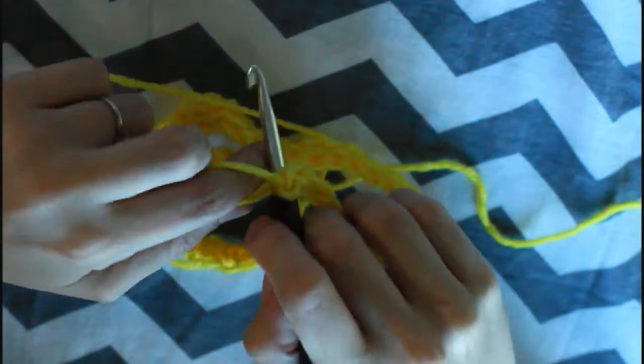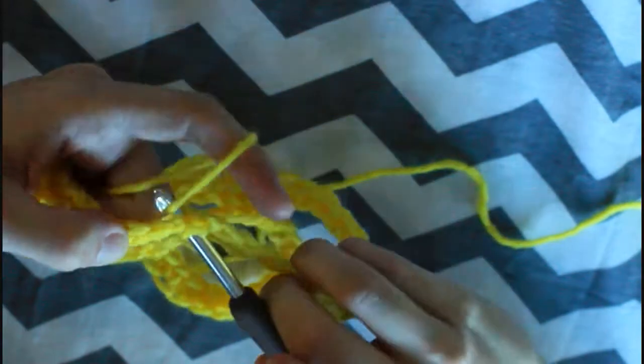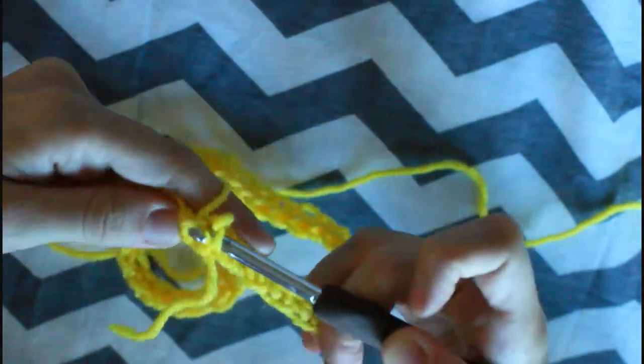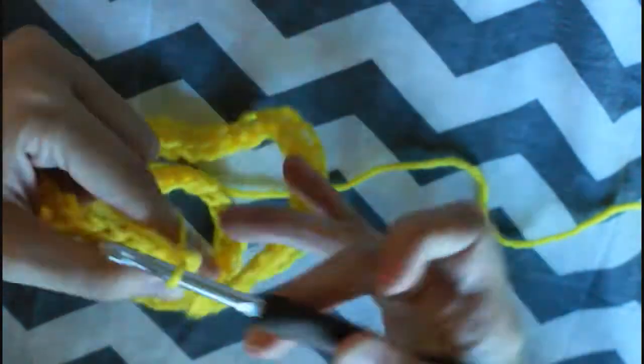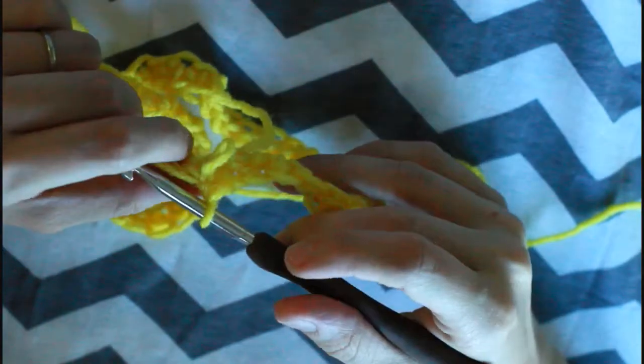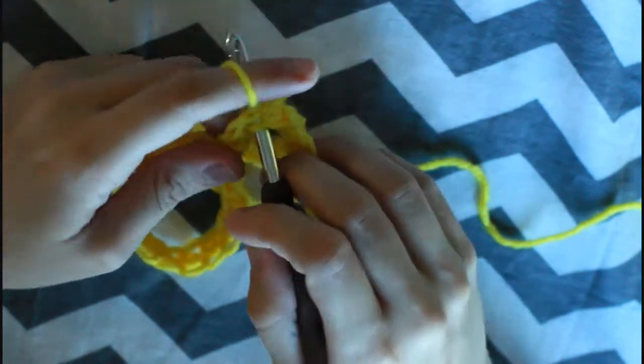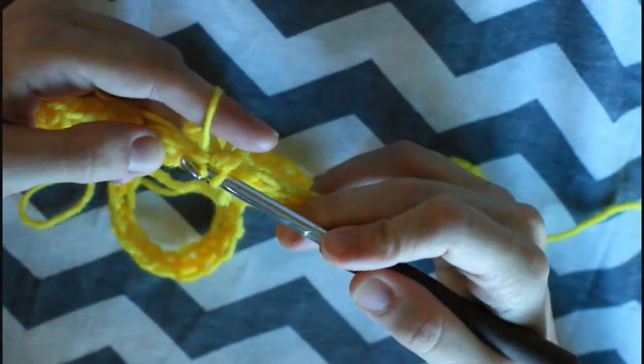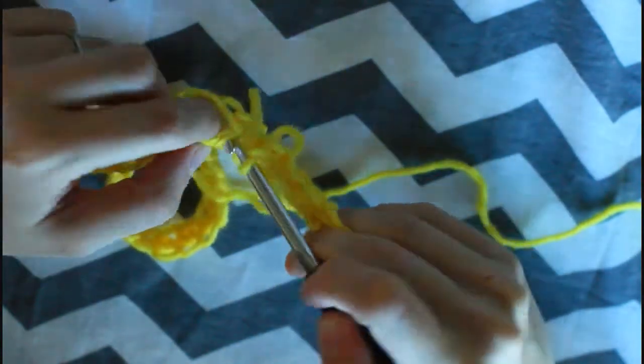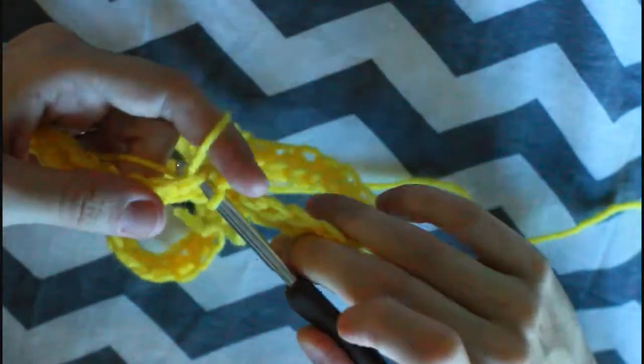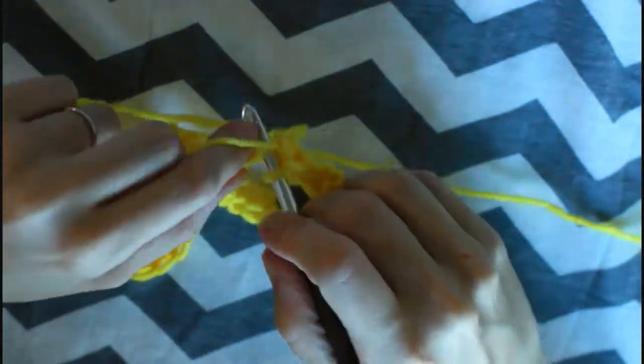Now we're gonna start with our loop stitch. I also have a tutorial for this one, but let me show you just in case. We're gonna do all loop stitches all the way until the end. Just insert your hook, go with your hook over your yarn. Grab your yarn and you will create 3 loops instead of the normal 2 loops with single crochet. And then you will yarn over again and go through all of them. And that is our loop stitch.